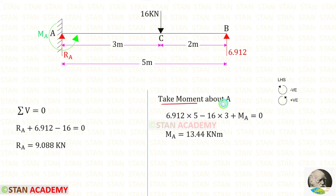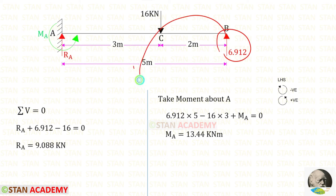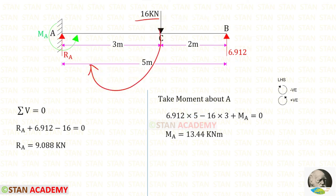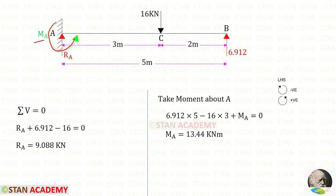Now let us take moments about A and find Ma, using the left-hand side rule where clockwise is negative and anticlockwise is positive. Rb acts anticlockwise at distance 5 (positive); the 16 kN load acts clockwise at distance 3 (negative). Assuming Ma acts anticlockwise (positive), we solve and get a positive value, confirming Ma acts in the anticlockwise direction.